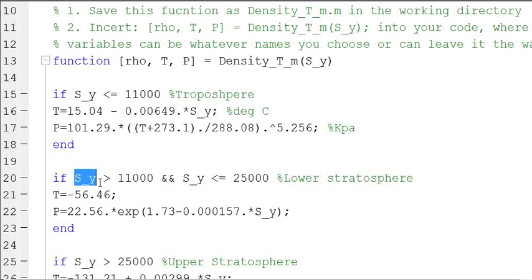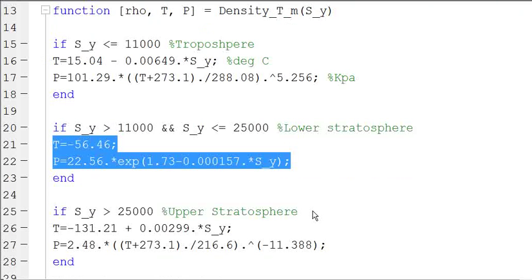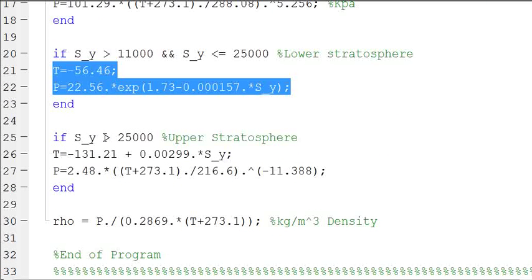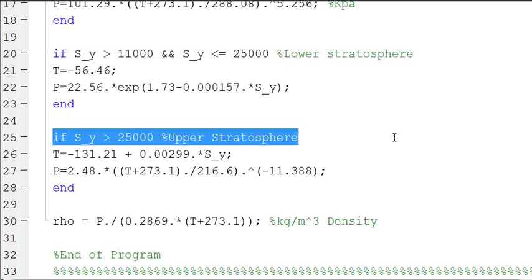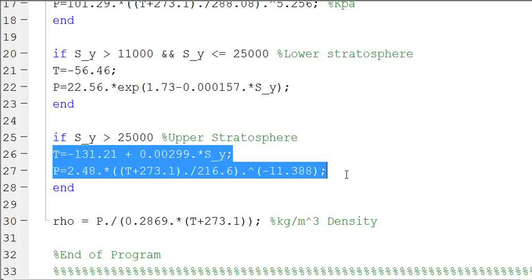If S_y is greater than 11,000 and less than 25,000, we're in the lower stratosphere and we're going to set T and P equal to these. And if it's greater than 25,000, we're in the upper stratosphere and we're going to use these two equations to define our temperature and pressure.